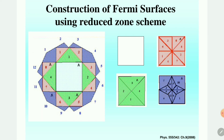Similarly, the third Wigner-Seitz cell — the red region — can also be translated and mapped into the first Wigner-Seitz cell using the reciprocal lattice vector. The various indexed pieces can be translated to fit within the first Brillouin zone. Therefore, the Fermi surface in the reduced zone scheme can be mapped into the two-dimensional Wigner-Seitz cell like this.